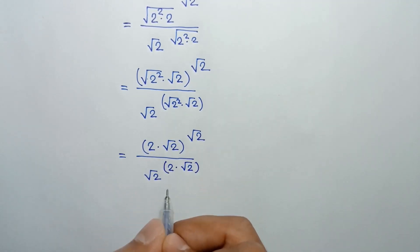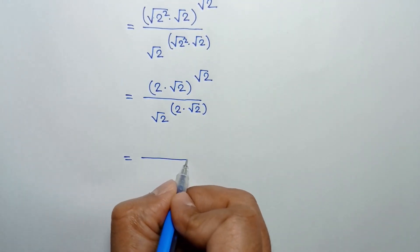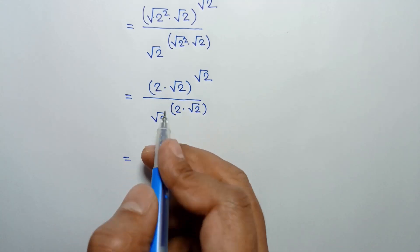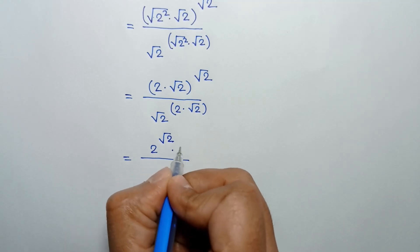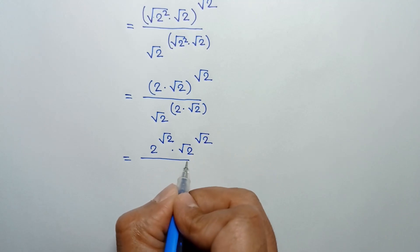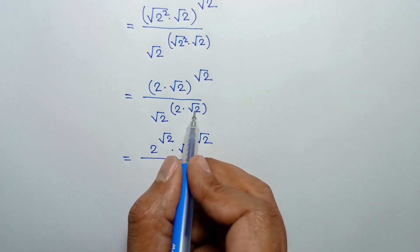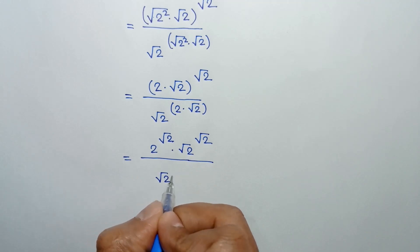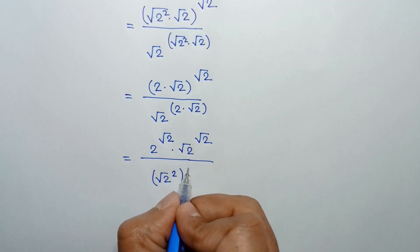So the expression becomes 2 times square root of 2, whole to the power square root of 2. This can be written as 2 to the power square root of 2, times square root of 2 whole to the power square root of 2. And square root of 2 whole to the power square root of 2 can be further rewritten using the square.